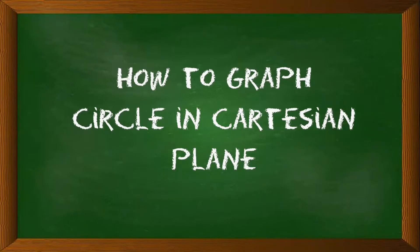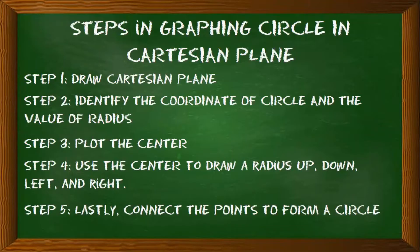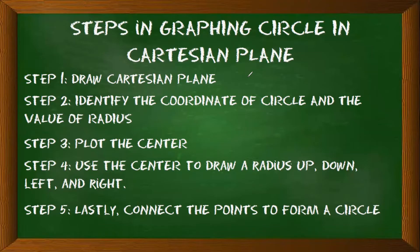There are steps to follow in order to graph a circle in the Cartesian plane. Step 1: Draw a Cartesian plane. Step 2: Identify the coordinates of the center of the circle and the value of the radius. Step 3: Plot the center. Step 4: Use the center to draw the radius up, down, left, and right. And lastly, Step 5: Connect the points to form a circle.